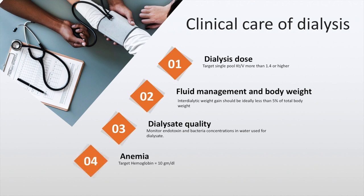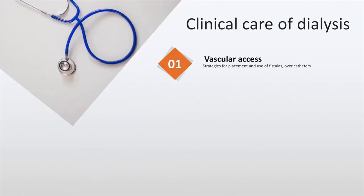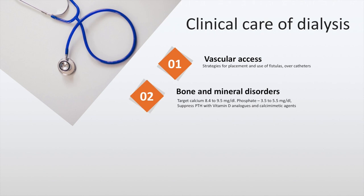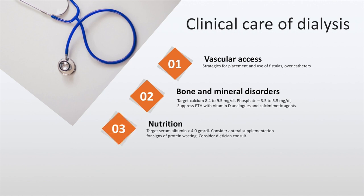Patients with chronic kidney disease are targeted to have a hemoglobin of 10 grams per deciliter. Strategies for placement and use of fistulas over catheters should be preferred. Bone and mineral disorders should be tackled by targeting a calcium of 8.4 to 9.5 milligrams per deciliter and a phosphate of 3.5 to 5.5 milligrams per deciliter. We must suppress PTH with vitamin D analogs and calcimimetic agents. We must focus also on nutrition with a target albumin of 4 grams per deciliter and must consider enteral supplementation in patients with signs of protein wasting.